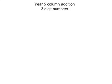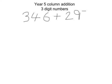Welcome to Year 5 Column Addition with 3-digit Numbers. The numbers we're going to add today are 346 plus 297.